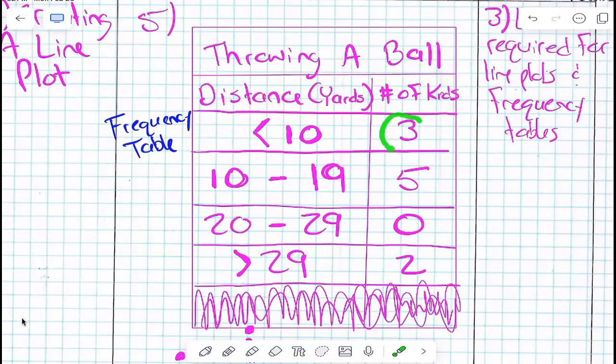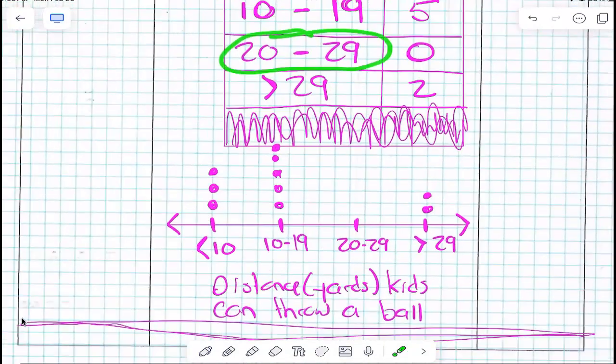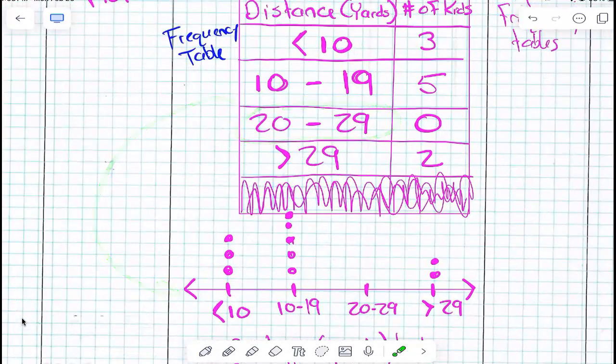So we have three kids can throw the ball less than 10 yards, right? How many kids can throw the ball between 20 and 29 yards? We took this data, or this frequency table, and we made a line plot.